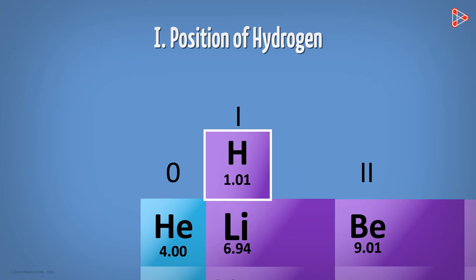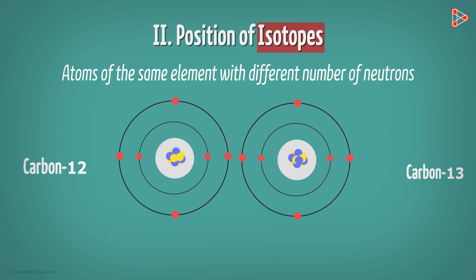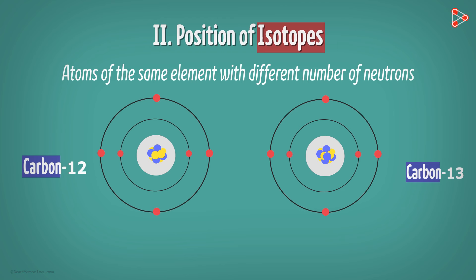Next limitation of the Mendeleev's table was the position of isotopes. Can you recollect what isotopes are? Yes, they are the atoms of the same element with different number of neutrons. That is the reason why in spite of belonging to the same element, the atoms have different atomic masses.